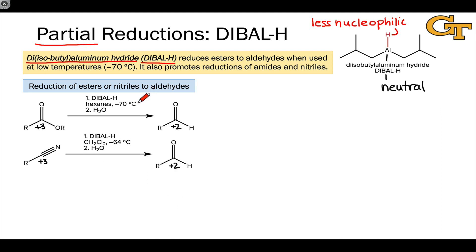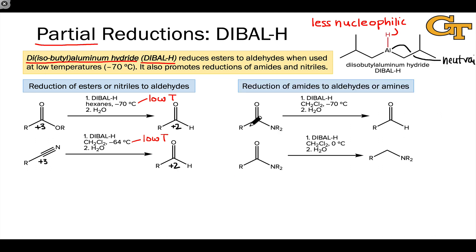The low temperatures are worth noting here — this is important for stopping the reaction at the plus 2 oxidation level. If we warm this up, DIBAL has the potential to react again, getting us down to the plus 1 oxidation level in alcohols. Temperature also plays an important role in the reductions of amides by DIBAL. If we use it at low temperature, we get to a product at the plus 2 oxidation level — the aldehyde. So DIBAL plus an amide at negative 70 degrees C gives an aldehyde product at the plus 2 oxidation level.